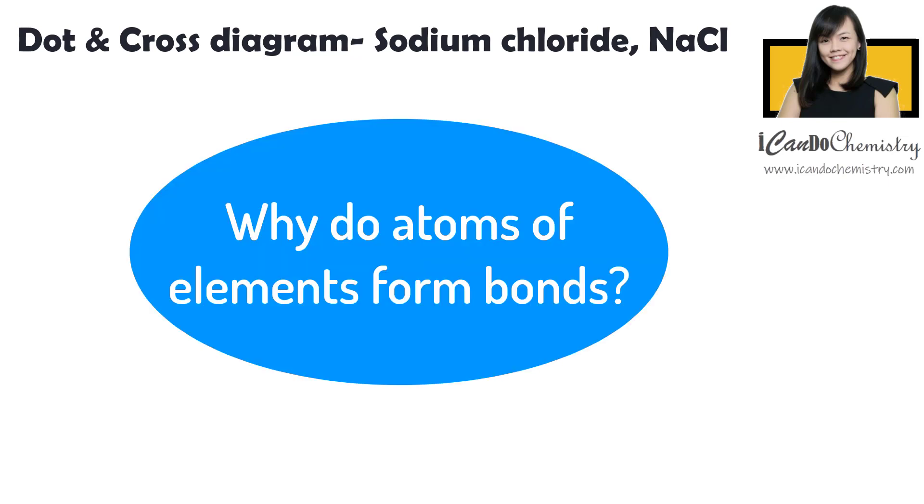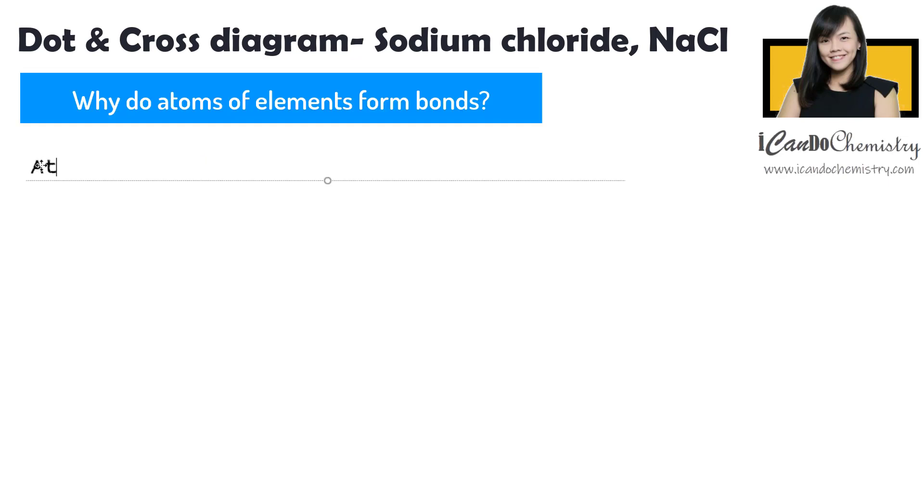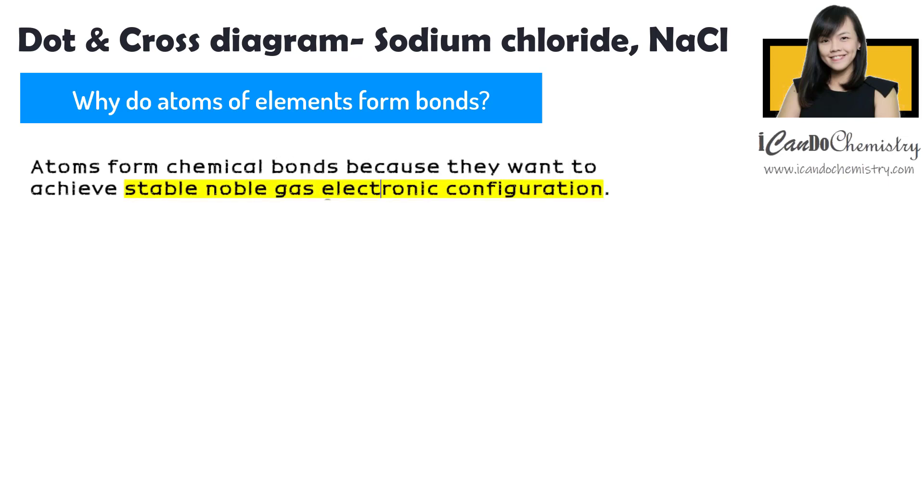Why do atoms of elements form bonds? Atoms of elements, except the noble gases, form chemical bonds to achieve stable noble gas electronic configuration.